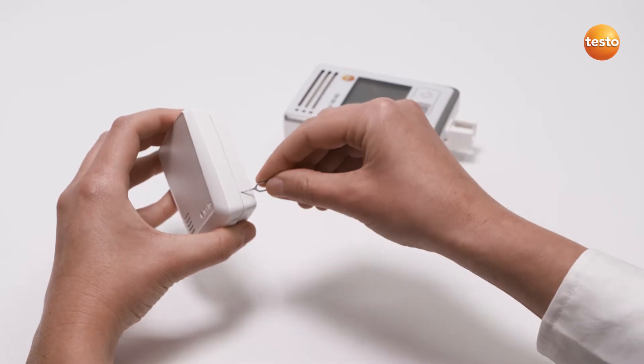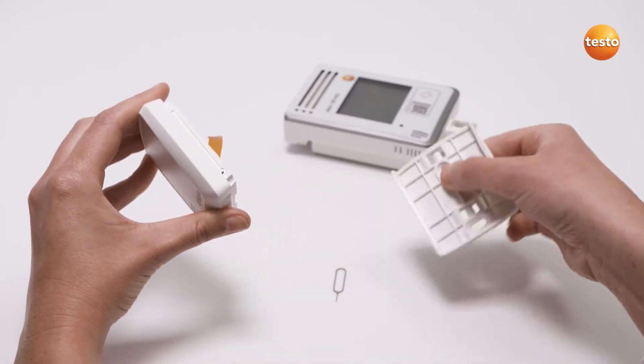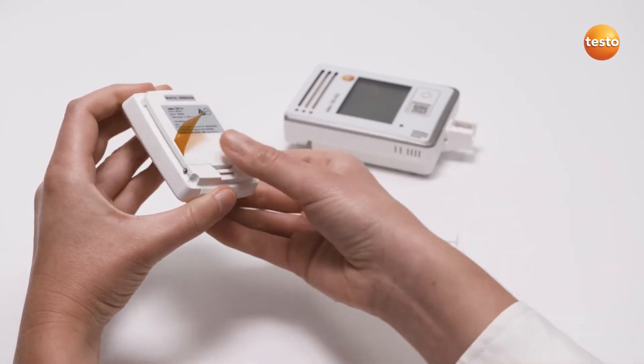To do this, please insert the unlocking tool into the small aperture on the right edge. Push the logger up gently at the same time.